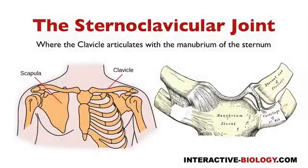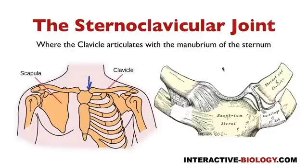Here we're looking at the sternoclavicular joint. Like we said in one of the previous videos, this is where the clavicle articulates with the manubrium of the sternum. We can see that right here — we have that articulation here, and we can also see it in this picture, of course, with some of the ligaments.